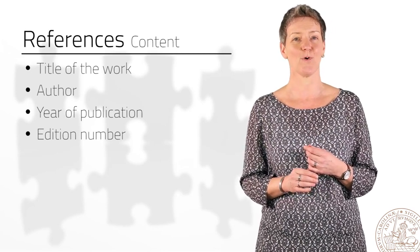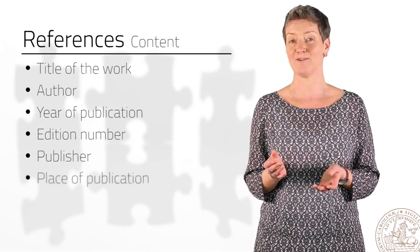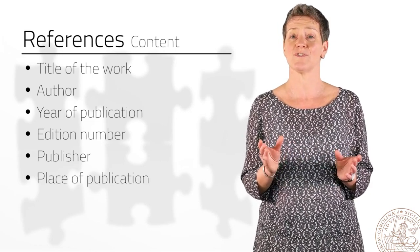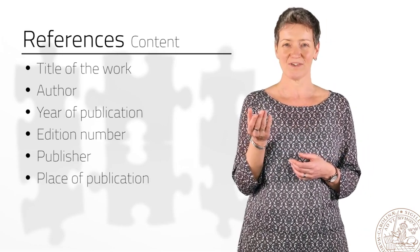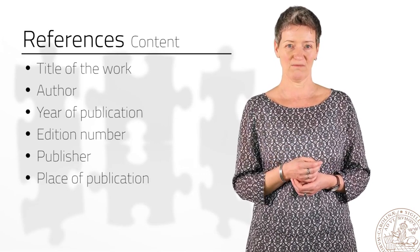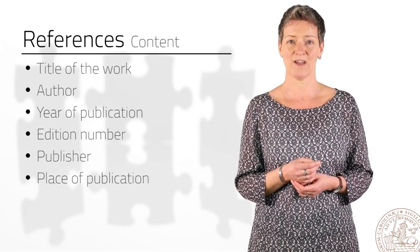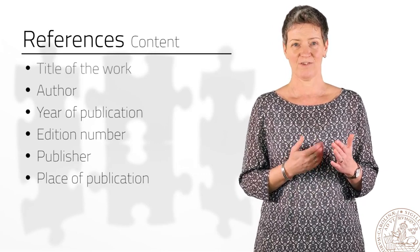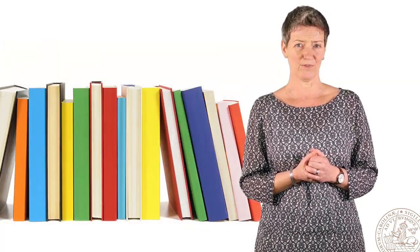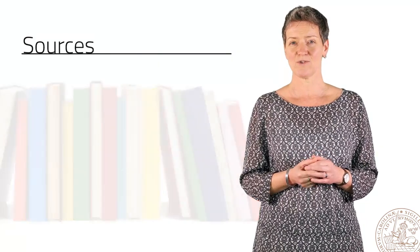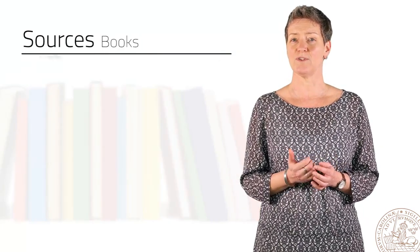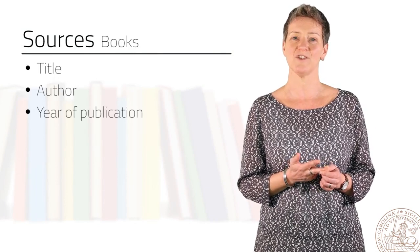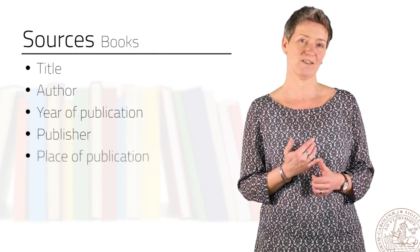The same goes for a book's publisher and place of publication, because these factors can affect the way a book looks. Imagine someone has another edition of the same book, the page numbering may be different, and that will make your source even harder to find. So, how do you refer to different sources? When you source a book, you need to include the title, as we saw earlier, the author, the year of publication, the publisher, and the place of publication.